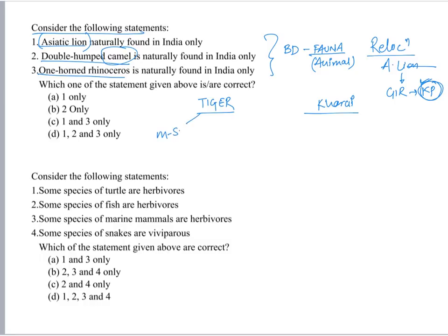UPSC has asked questions about M-stripes, NTCA (National Tiger Conservation Authority) which is under the Wildlife Protection Act 1972, and various tiger reserves. Depending upon this, we should know that particular animals are important for UPSC and we should focus more upon them. The next question is also related to biological diversity — specifically fauna.